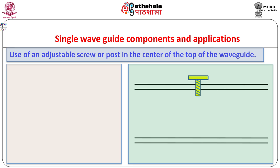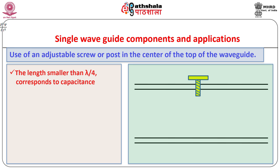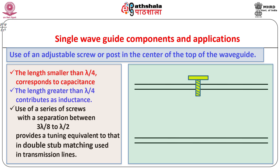Location of the screw or post must be carefully chosen so as to have desired inductance or capacitance. The length of the screw or post is an important parameter. A length smaller than lambda/4 corresponds to capacitance while a length greater than lambda/4 contributes as inductance. Use of series screws with a separation between 3*lambda/8 to lambda/2 provides a tuning equivalent to that in double stub matching used in transmission lines.